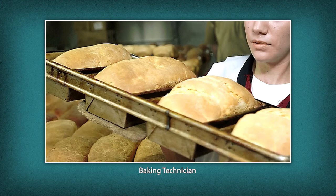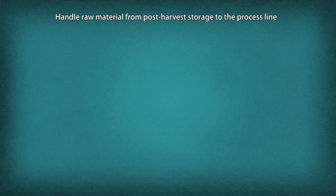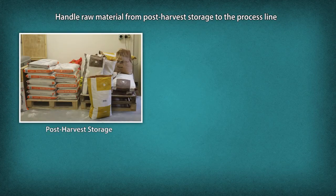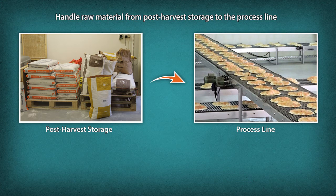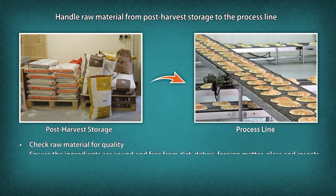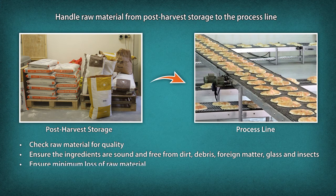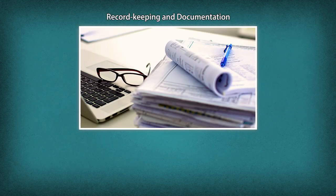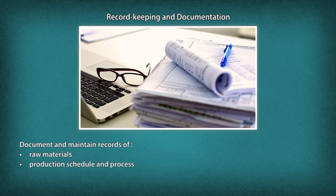Roles and responsibilities of the baking technician. Handle raw materials from post-harvest storage to the process line. Check raw material for quality — ensure the ingredients are sound and free from dirt, debris, foreign matter, glass and insects. Ensure minimum loss of raw materials. Record keeping and documentation: document and maintain records of raw materials, production schedule, process and finished products.